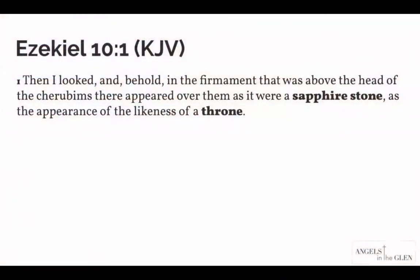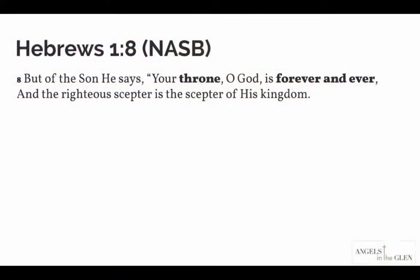Ezekiel 10:1 also says: 'In the firmament above the head of the cherubim there appeared over them as it were a sapphire stone, as the appearance of the likeness of a throne.' Sapphire stone throne — tightly coupled right there. Now, is God's throne temporary or enduring? Of course it's everlasting. Hebrews 1:8: 'But of the Son he says, your throne, O God, is forever and ever, and the righteous scepter is the scepter of his kingdom.' God's throne is established forever — we don't need to worry about another kingdom overtaking it.